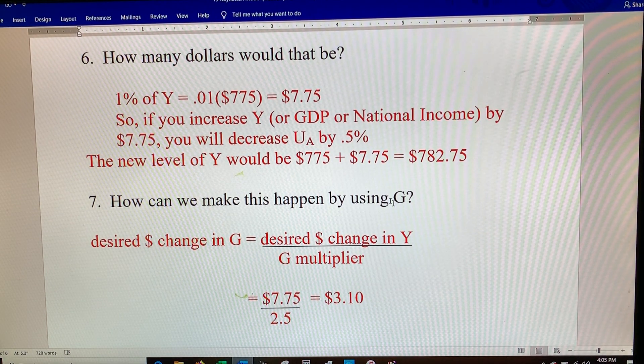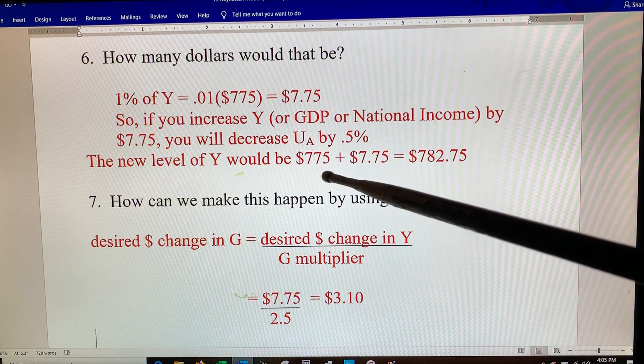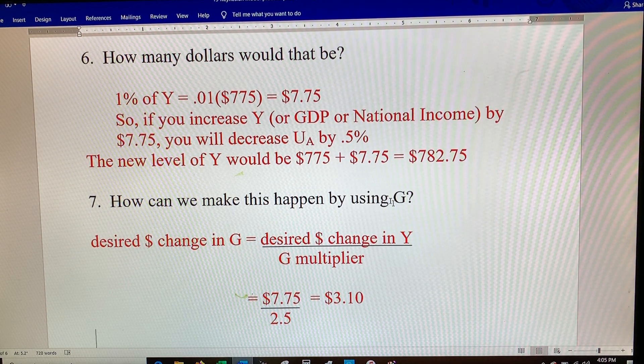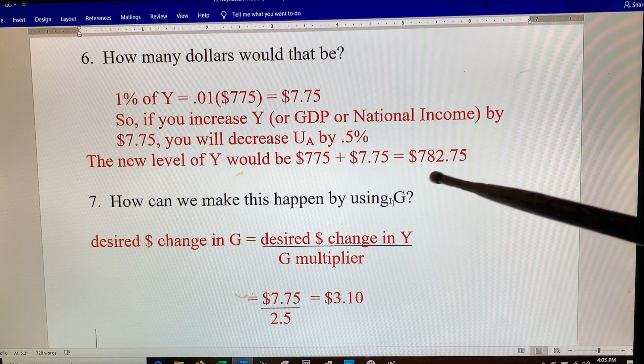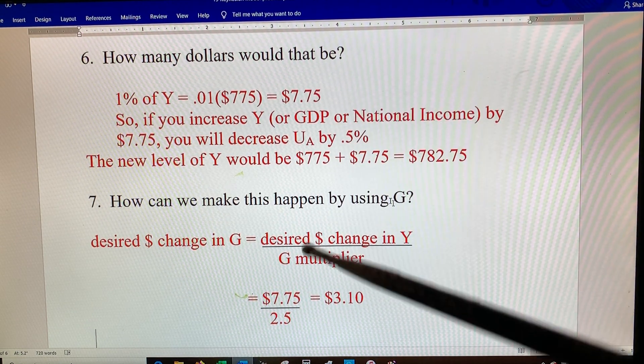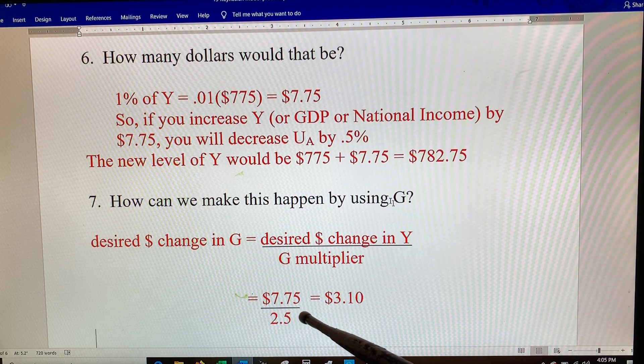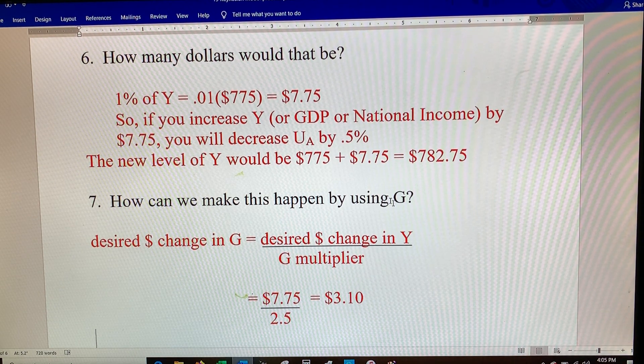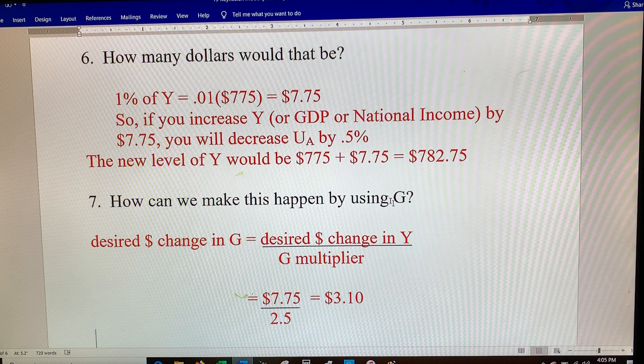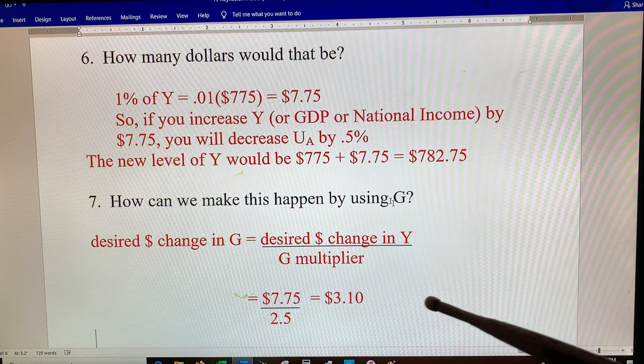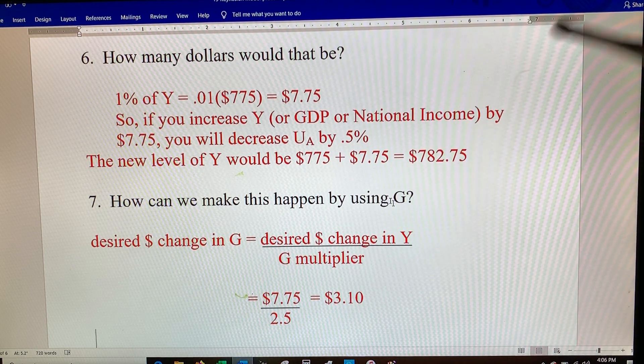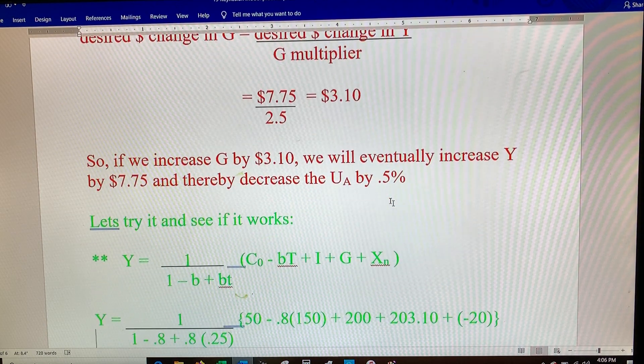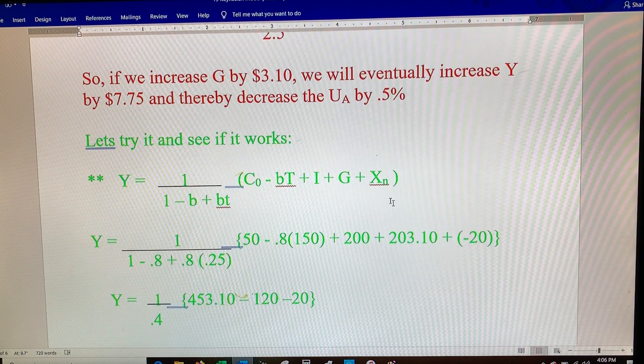Your new level would be 782.75. So let's do that by first of all using government spending. You take the desired change in GDP divided by the multiplier for G, get three dollars and ten cents. So if you have Congress spend three dollars and ten cents over a period of a few months, it will be re-spent and re-spent until you get seven dollars and 75 cents of income increase, which is going to put you right where you want to be.